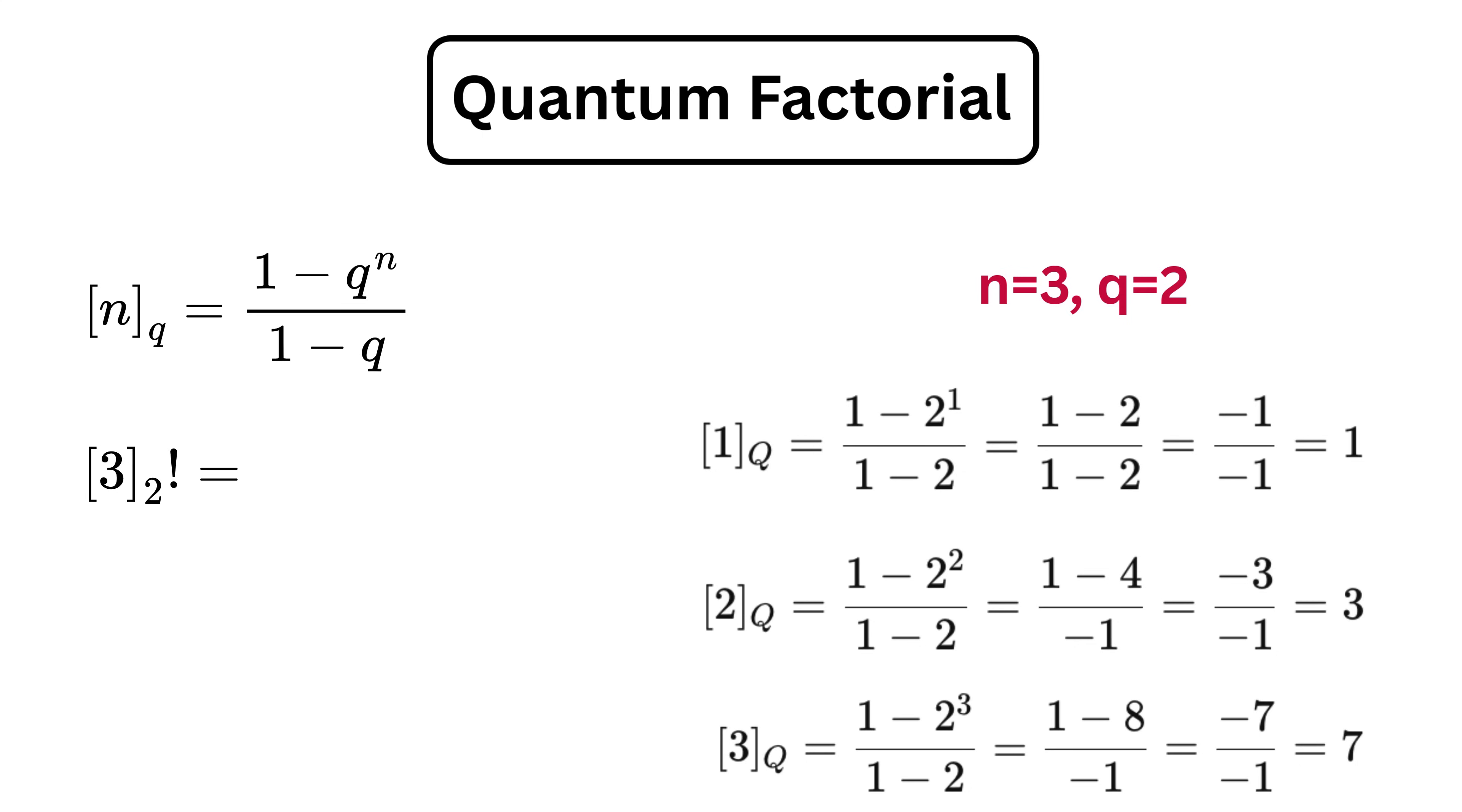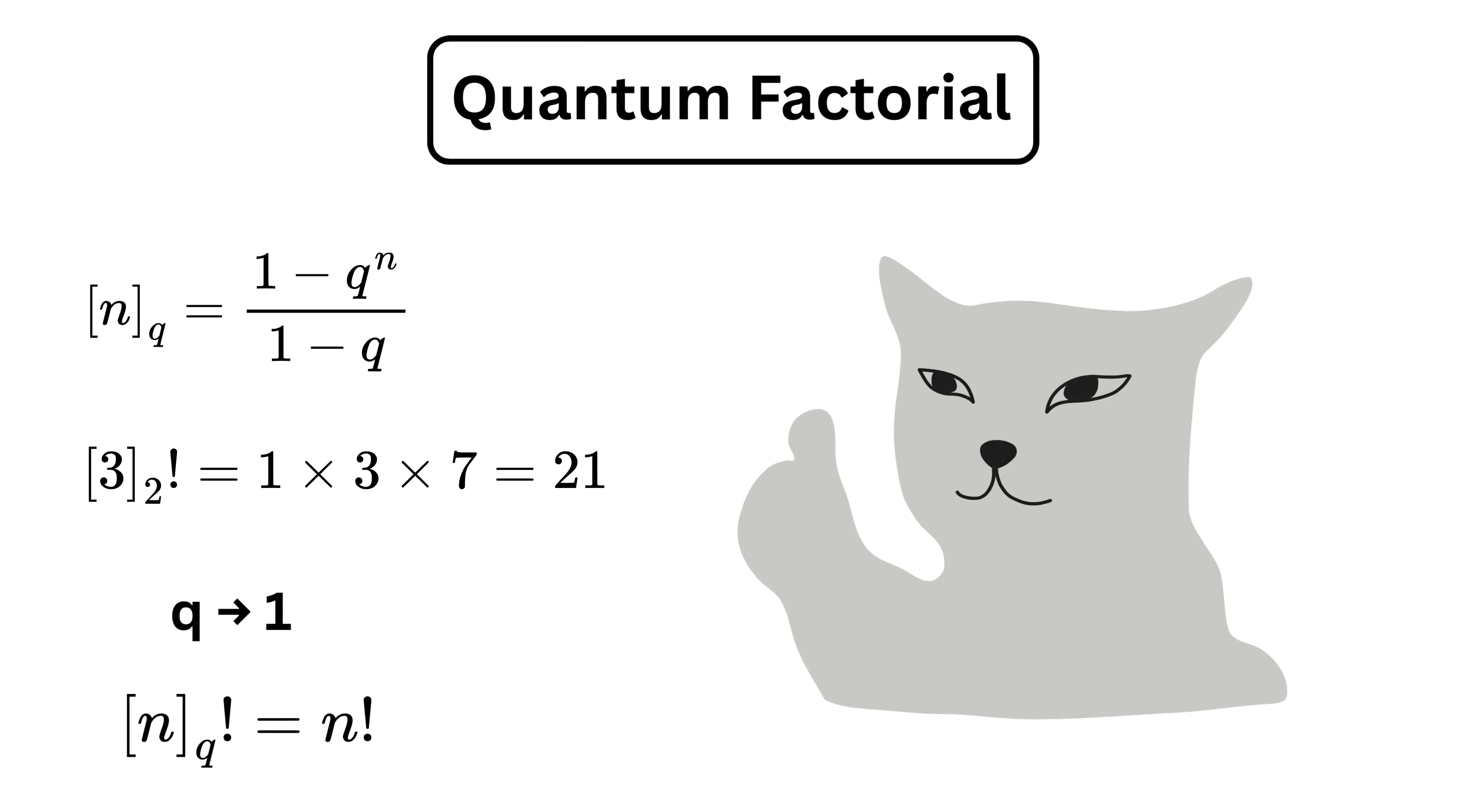So the quantum factorial becomes 1 times 3 times 7, which is 21. It's like a flexible version of factorials that depends on the value of q. And when q gets close to 1, the quantum factorial becomes the same as the usual factorial. So, good!